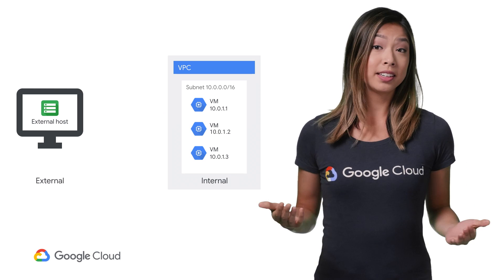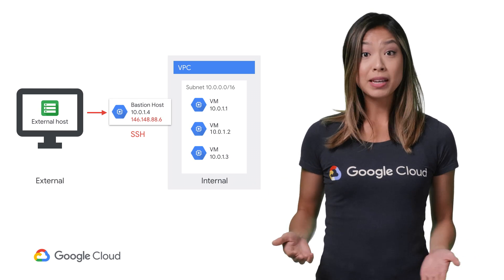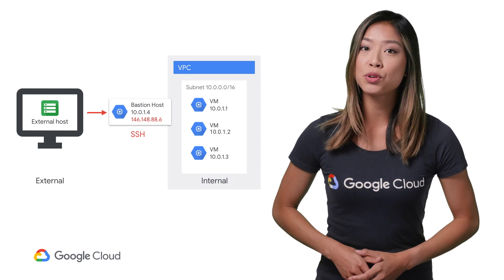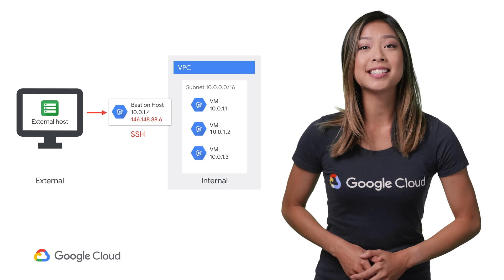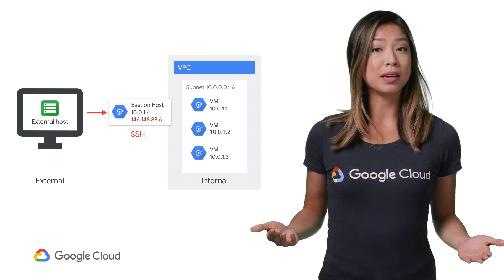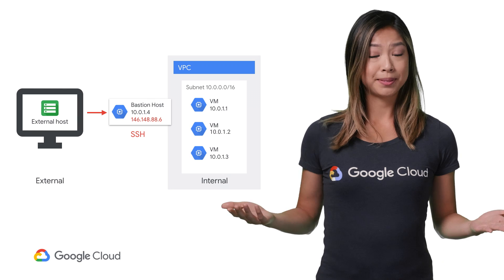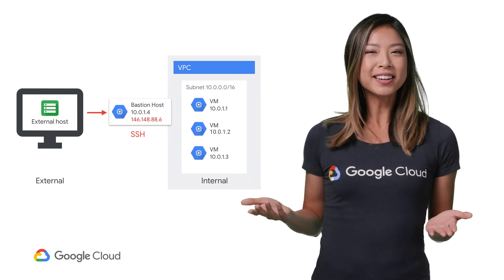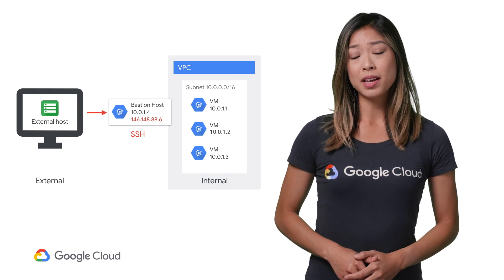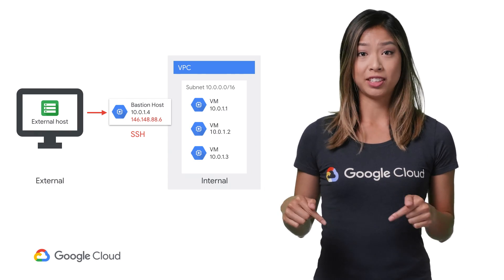Another secure setup would be something called a bastion host — basically an external endpoint which allows your clients to SSH from the public internet and still keep your apps from being public-facing, which, again, works, but this only deals with one side of the problem, namely inbound communication.